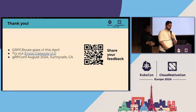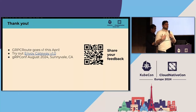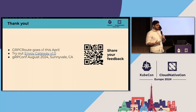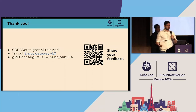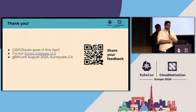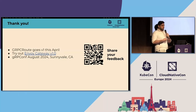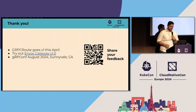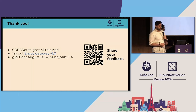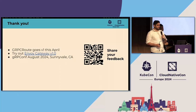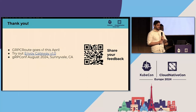That has been our whirlwind tour of gRPC, the Gateway API, and gRPCRoute. I've been super happy to see how much Gateway API implementations have embraced this resource, and now I'm looking forward to seeing users put gRPCRoute into action routing production gRPC traffic. As always, we hope this talk was helpful. If you have any feedback, please follow the QR code and leave your feedback. Envoy Gateway has just hit v1 with support for gRPCRoute, so please go ahead and try that out. There's also gRPCconf this August in Sunnyvale, California — we'd love to see you there to discuss gRPC in more detail. Let's move on to any questions you might have.